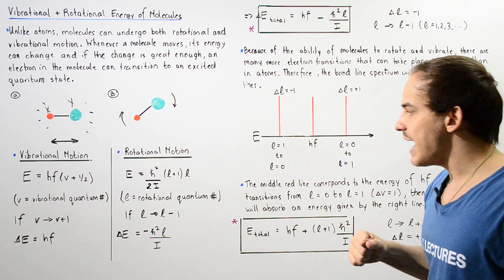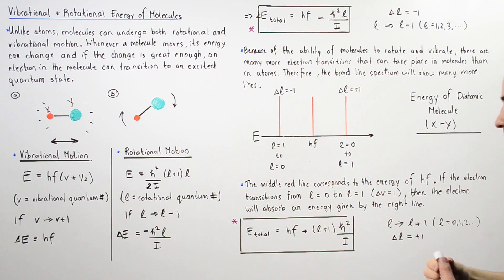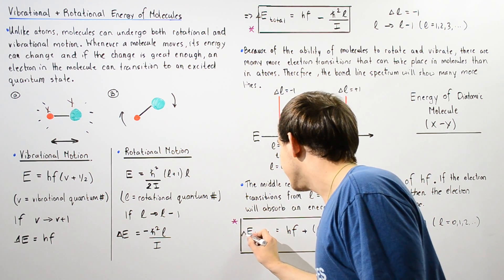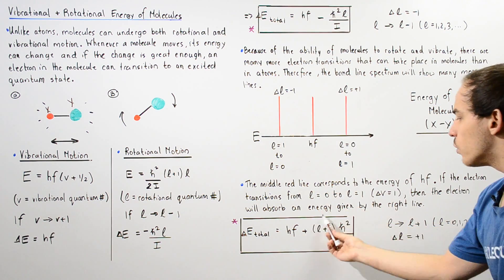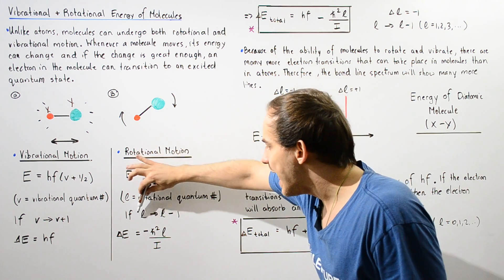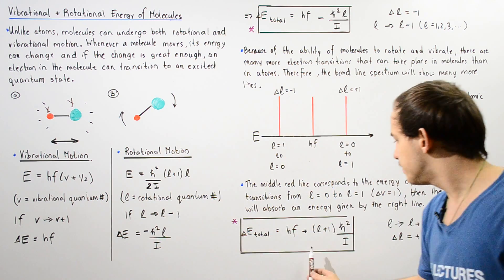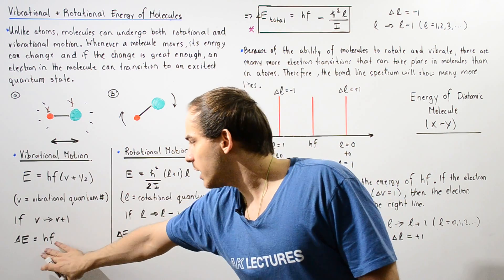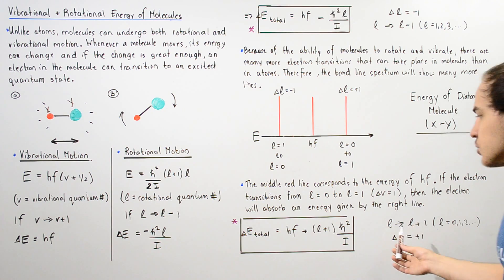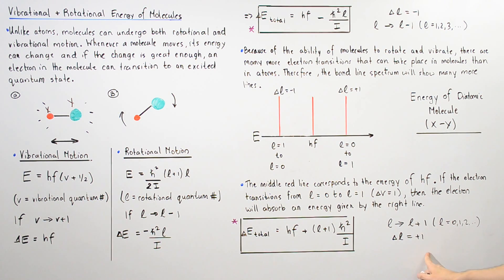And notice that for this particular case, our formula is not given by this equation, but it's given by this equation. So basically the delta E total is given by HF plus this quantity, where this quantity comes from using L to L plus one. So our equation is no longer given by this, but given by this. Now because the V still goes from V to V plus one, the HF doesn't actually change. So this equation works as long as our delta V is still positive one and delta L is positive one as well.